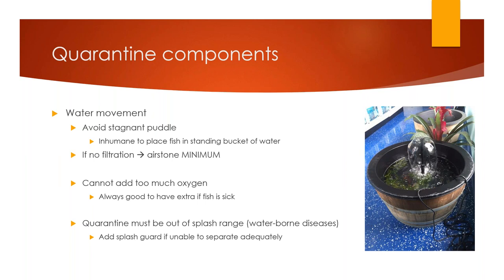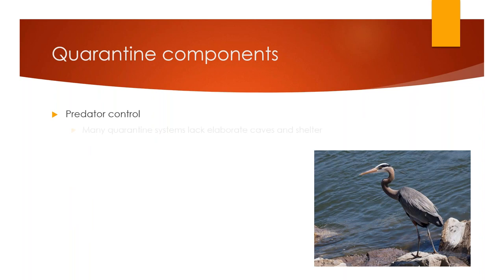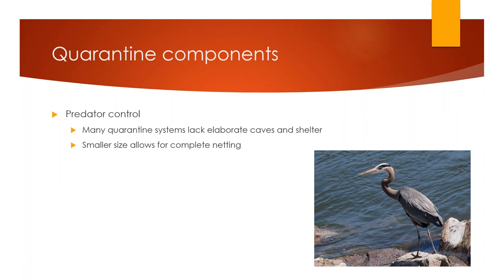Predator control: like your main system, many quarantine systems lack the elaborate caves and shelters of a main pond. However, the smaller size of quarantine systems usually allows for complete netting — you can have a net over the entire surface, a lid, or keep it in your garage somewhere safe from predators. Because uncovered systems make for very easy snacks for herons and raccoons.